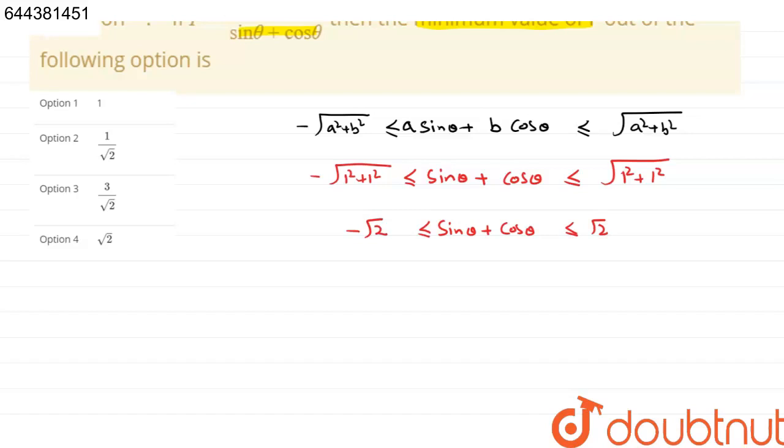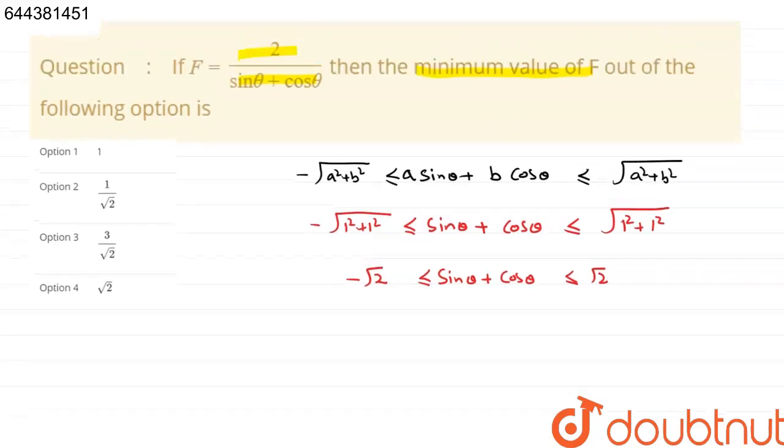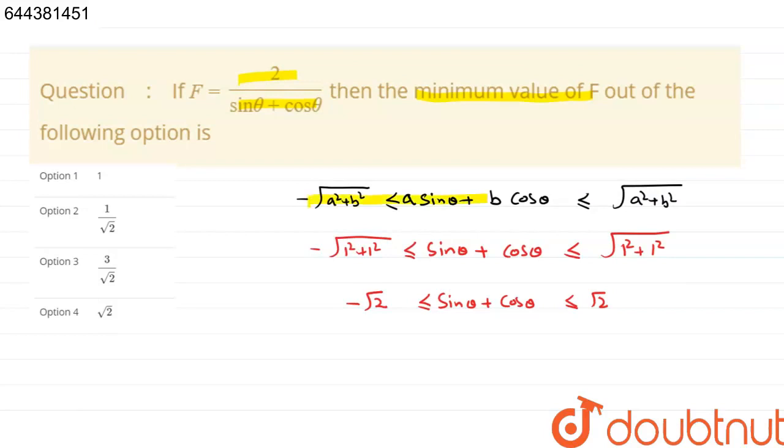So the basic thing we have to keep in mind is that a sin theta plus b cos theta always lies between minus root under a squared plus b squared to plus root under a squared plus b squared.